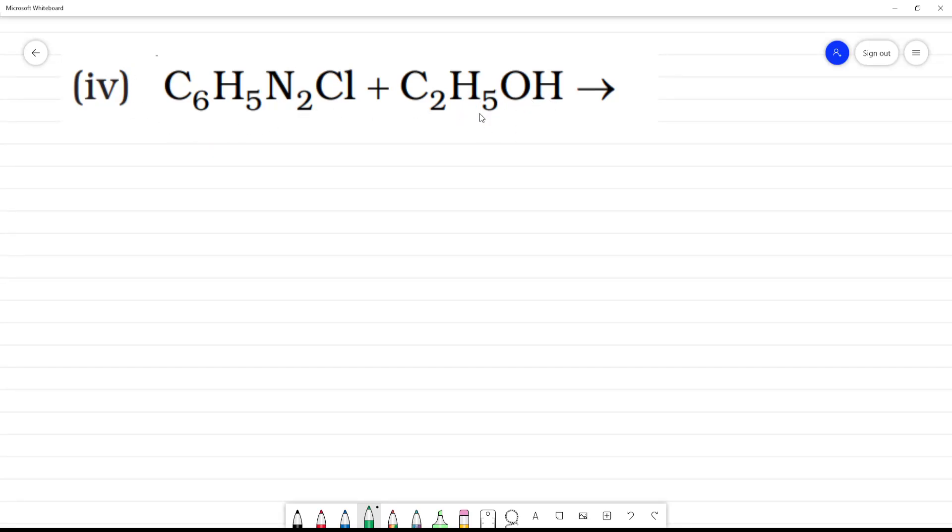C6H5N2Cl plus C2H5OH. This is what? Ethanol. It is benzenediazonium chloride.